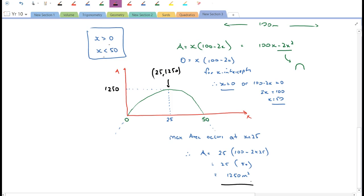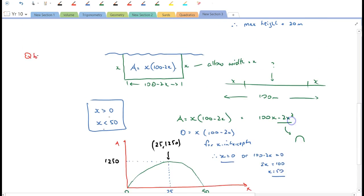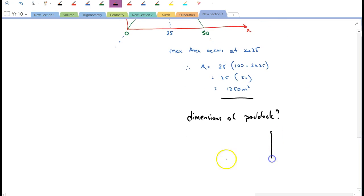What will be the dimensions of the paddock to achieve its maximum area? All right, well, the dimensions are if x is 25, so my dimensions of paddock. Now, the dimensions just mean what are the length and the width. All right, so that means that we've got, we're just wondering what this is. So we've found a value of x to be 25, so this is 25 here as my width, and if my width's 25, then my length is 50 meters. So dimensions of paddock, 50 meters by 25 meters.